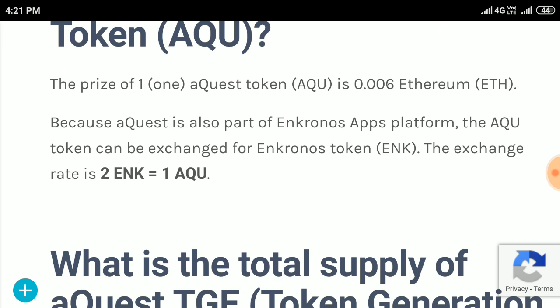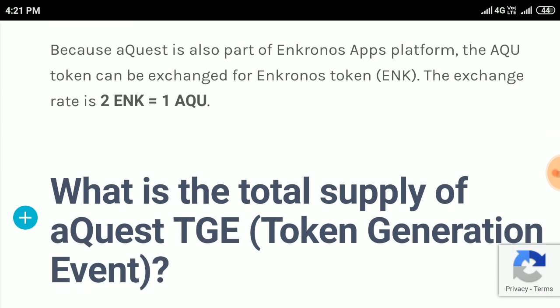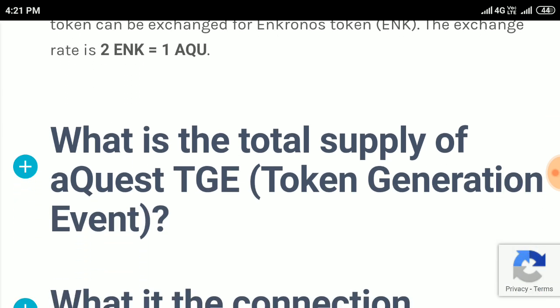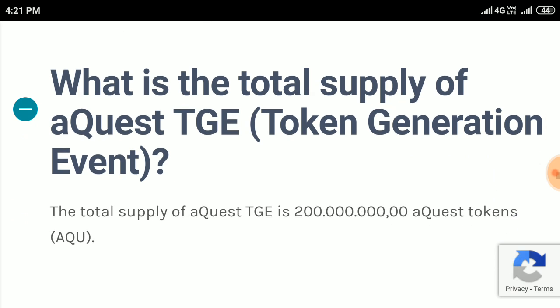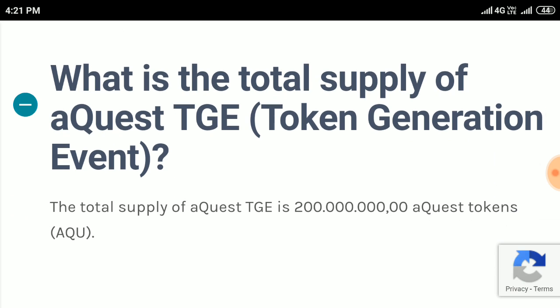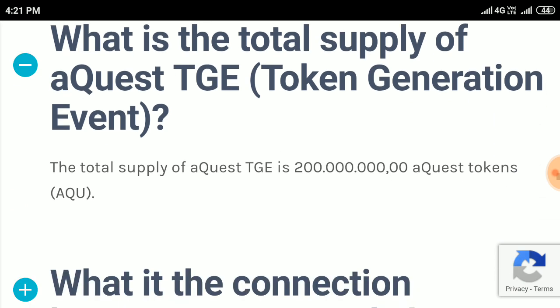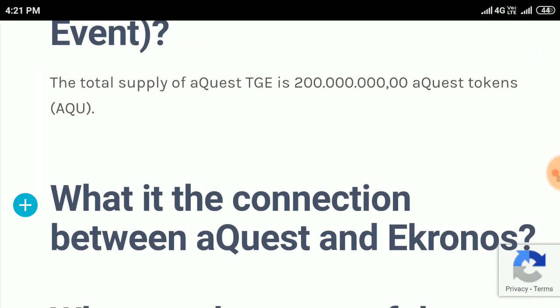The AQUA token can be exchanged for MOST token. The exchange rate is: 2 MOST equals 1 AQUA. What is the total supply of AQUA? TGE — Token Generation Event. The total supply of AQUA TGE is stated in the AQUA token documentation.